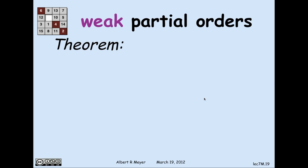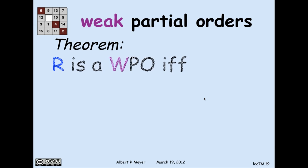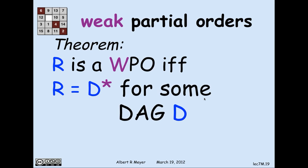Finally, the theorem that summarizes the whole story is: r is a weak partial order if and only if r is equal to the walk relation (including length-0 walks) for some DAG.